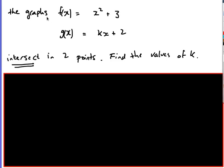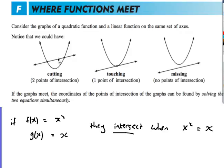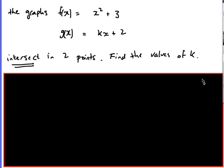Let's have a look at another one. There we go. F of x equals x squared plus 3. G of x is kx plus 2. Again, I've got a quadratic and I've got a line graph intersecting two points. So intersecting two points, then I'm going to have two solutions. So I'm going to have a case with two solutions. Find the values of k.